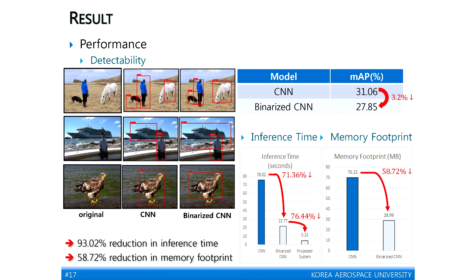저희 최종 결과는 바이너라이제이션을 했음에도 불구하고 동등한 성능을 내는 것을 볼 수 있습니다. 수행 시간 면에서는 71.36% 감소를 이뤘고 메모리 요구량에서는 58.72%를 감소시켰습니다. 소프트웨어, 하드웨어 가속을 통해 수행 시간을 다시 한번 76.44% 감소시켰습니다. 결론적으로 기존 오브젝트 디텍션을 위한 CNN보다 성능을 3.2%만 감소하면서도 수행 시간을 93.02%, 메모리 요구량을 58.72% 감소시켰습니다.